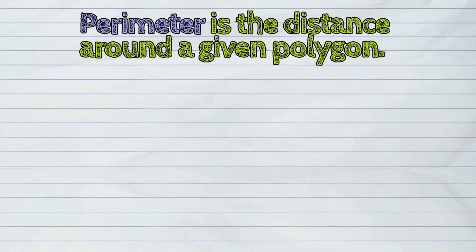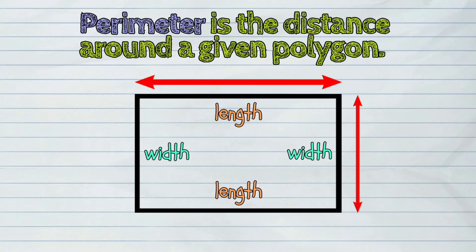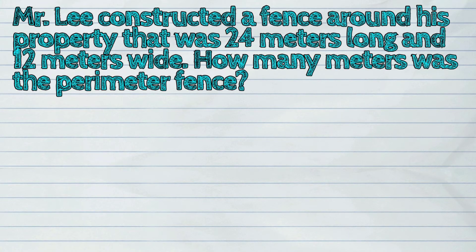Perimeter is the distance around a given polygon. Let us study this example to learn how to find the perimeter of a closed polygon like a rectangle.